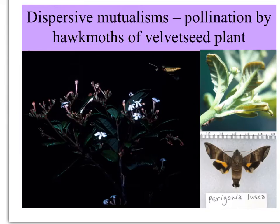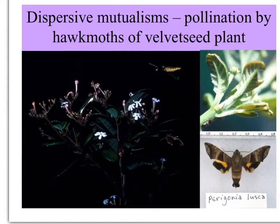There are lots of different dispersive mutualisms. Pollination is one, where visitors to flowers carry pollen — the gametes of plants — to their mates. This is a picture of the roughly velvet seed with the hawk moth visiting its flowers. This hawk moth was probably Paragonia lusca, whose caterpillars eat the leaves of the plant too. You can see on this leaf, along the midrib, there's a caterpillar with a little tail typical of a hawk moth caterpillar.